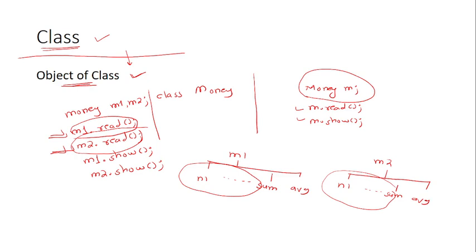In real life, class writers are different from users. After writing a class, the class writer releases a note about the public member functions and public member variables that can be accessed. The junior programmer who is creating objects reads that note and writes the main program. The junior programmer will never know about the private member function calculate that we wrote in the last video — they only know about read and show, because those are the two that are public.